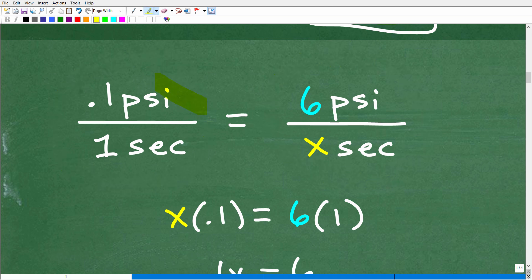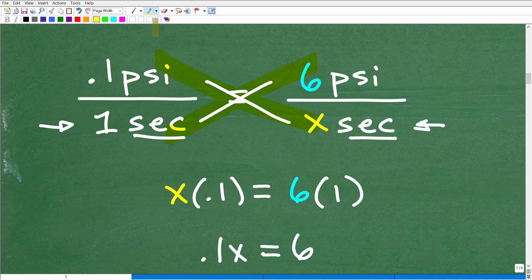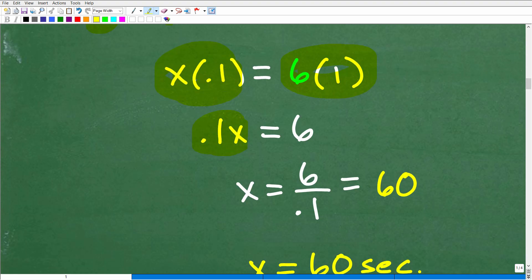Now we want to solve for seconds. We're going to use the cross product. It's going to be X—we want to know how many seconds. One really important thing: notice that my units of measure in the denominator are seconds. When you're constructing a proportion, you've got to make sure that the units of measure are in the same spot. In the denominator, I have seconds and seconds, and in the numerator, it's psi and psi. Now I'm going to use that cross product. This is going to be X times 0.1, and then 1 times this 6. We can drop the units of measure for now and focus on the algebra. So X times 0.1 equals 6 times 1. X times 0.1 is 0.1X. 6 times 1 is 6. To solve for X, I need to divide both sides by 0.1.